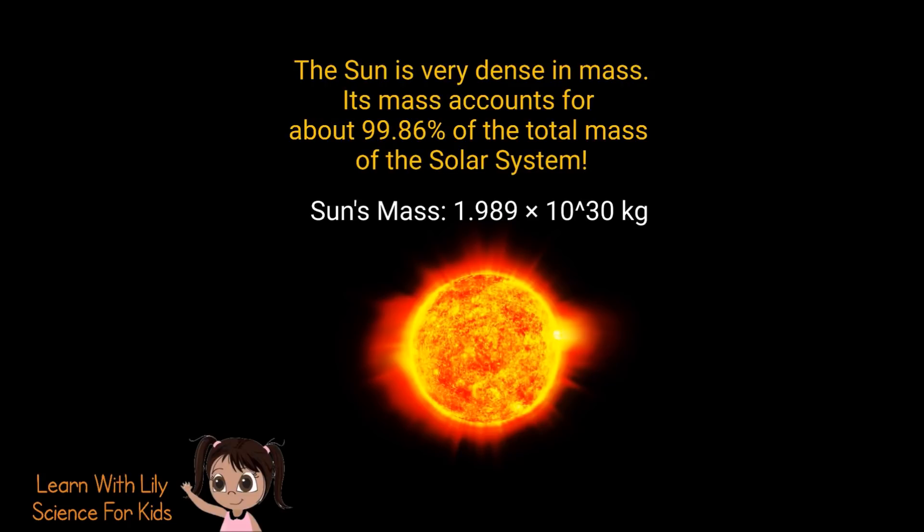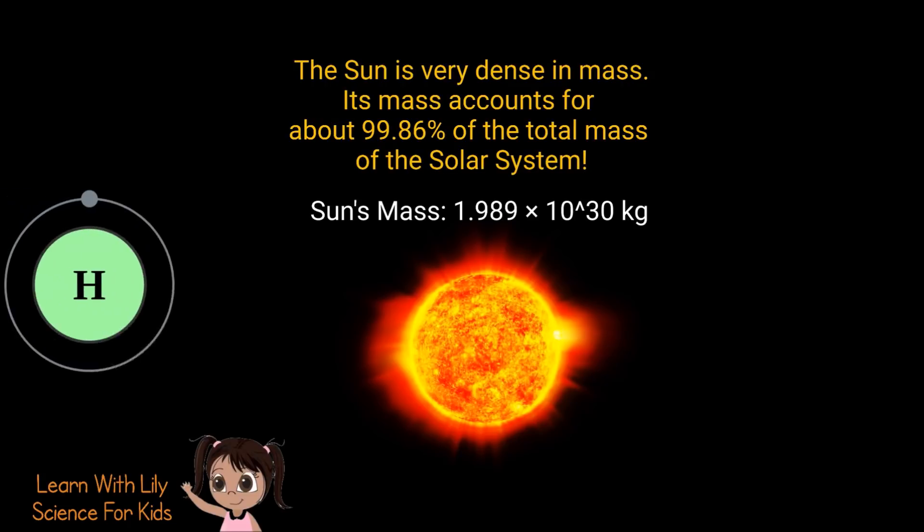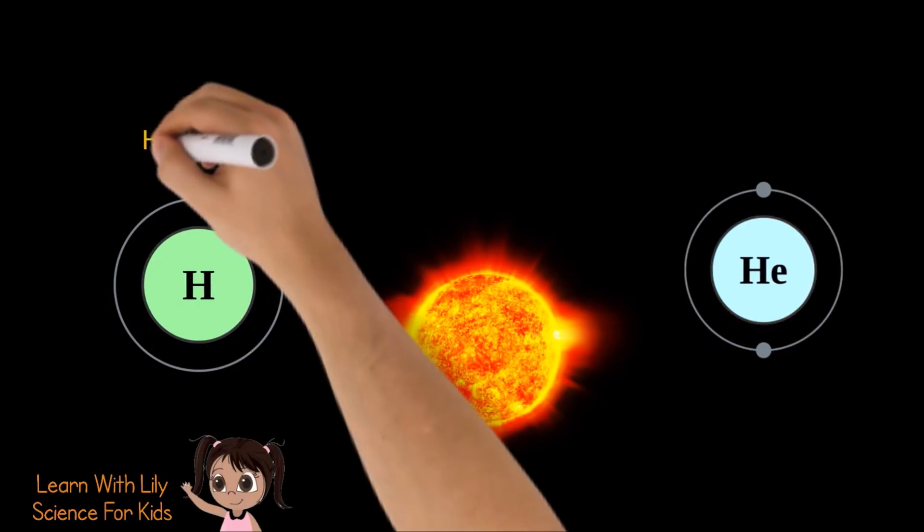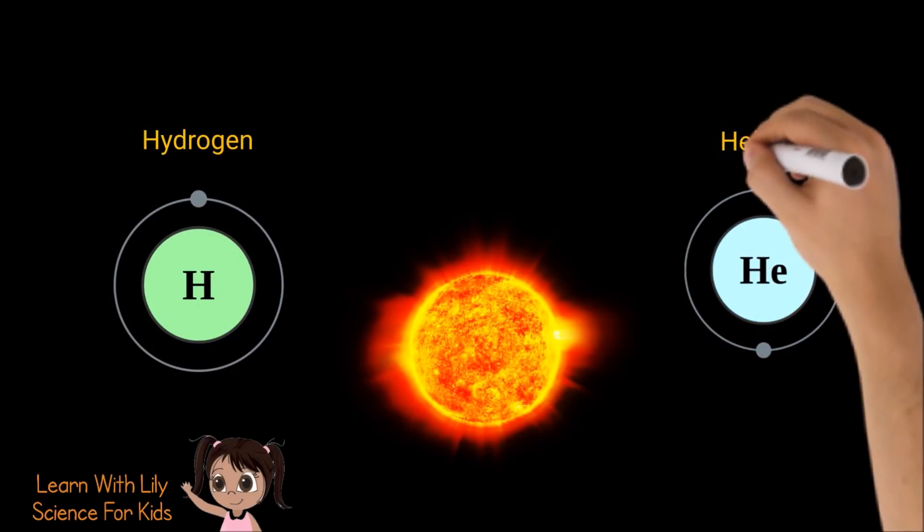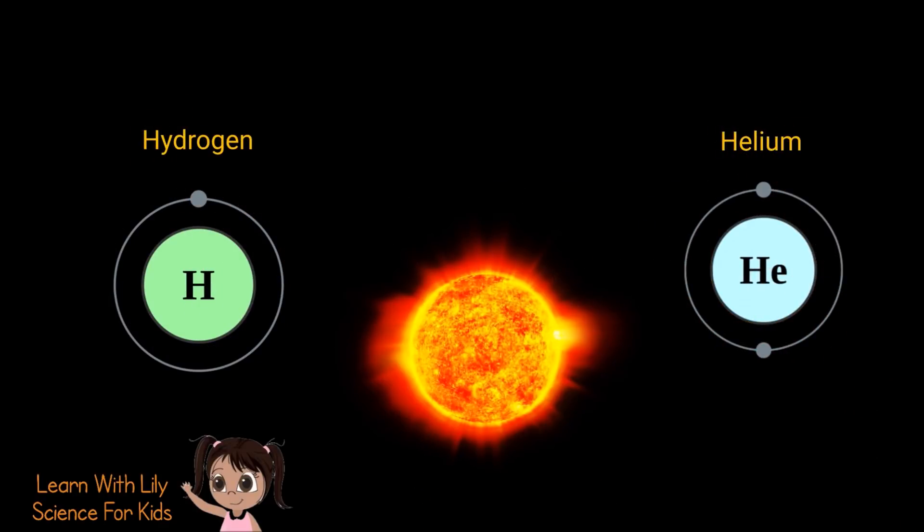The Sun is very dense in mass. Its mass accounts for about 99.8% of the total mass of the solar system. It's made mostly of hydrogen and helium and I think some carbon and nitrogen too.